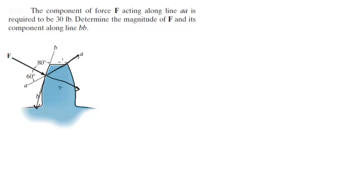They're telling you that the force along A is required to be 30 pounds. Then we're going to put the force along B over here, forming a parallelogram. I'm going to redraw this triangle over here. So you know that the force along A is 30 pounds, the force along B we don't know, and the force F we don't know either.